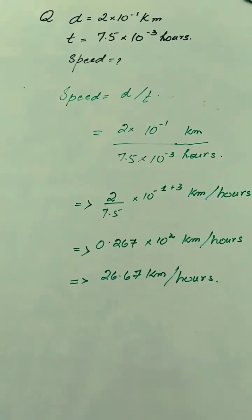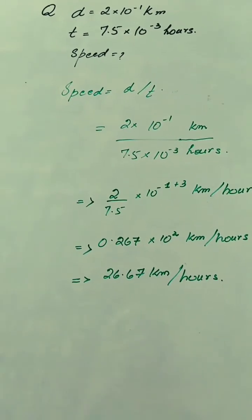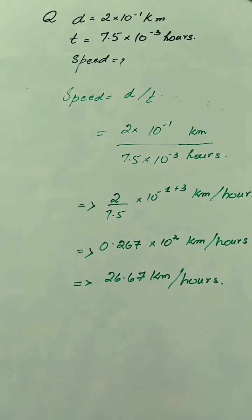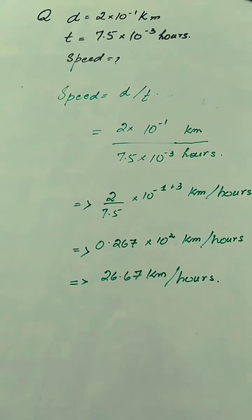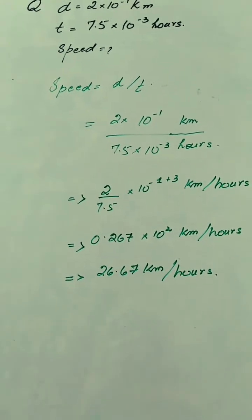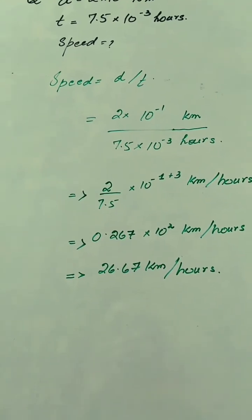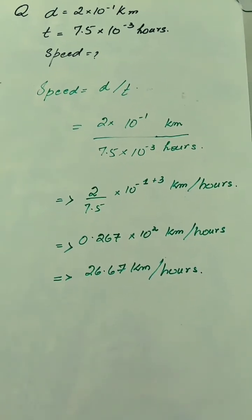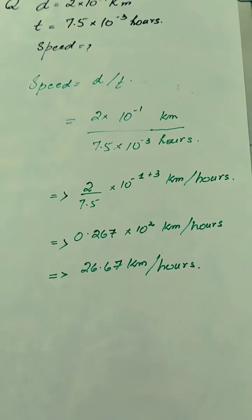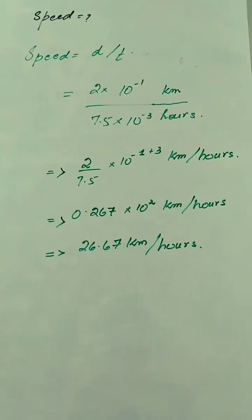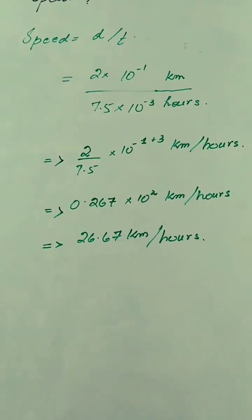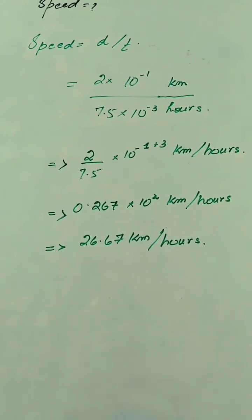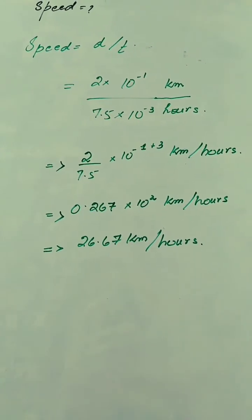Here's another question where we have to find the value of speed. The distance is given as 2×10⁻¹ km and time is given as 7.5×10⁻³ hours. As we know, speed = distance/time. Putting in the values: Speed = (2×10⁻¹) / (7.5×10⁻³). Dividing 2 by 7.5, we get approximately 0.267.